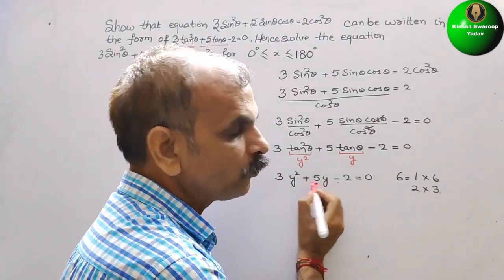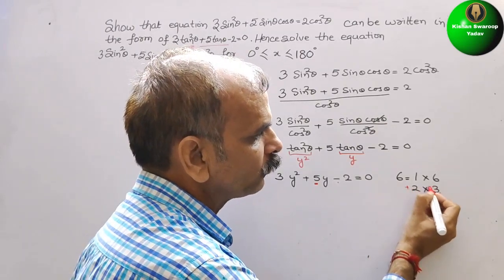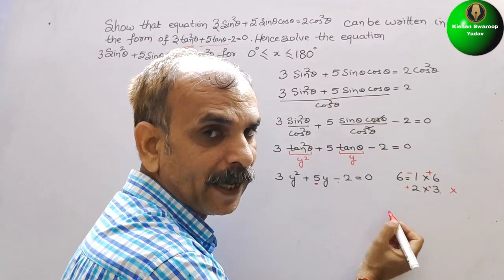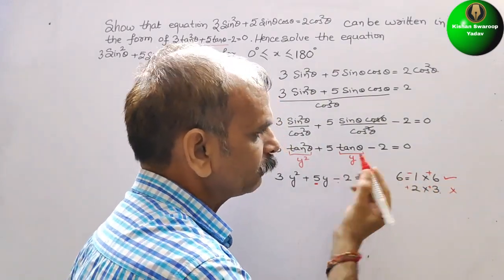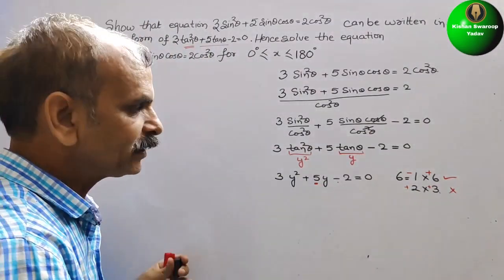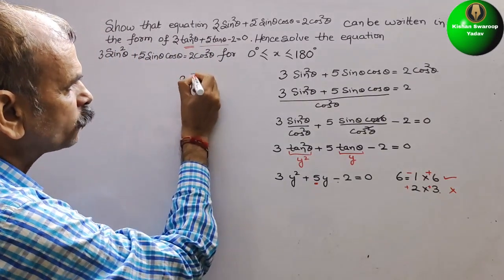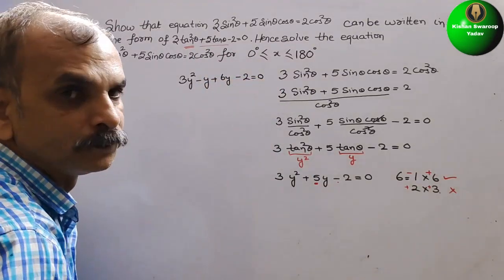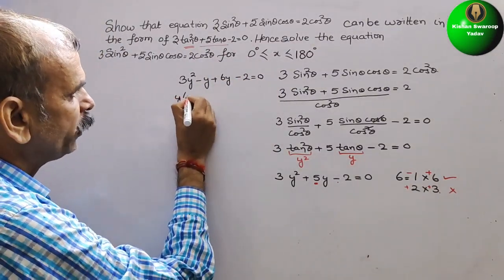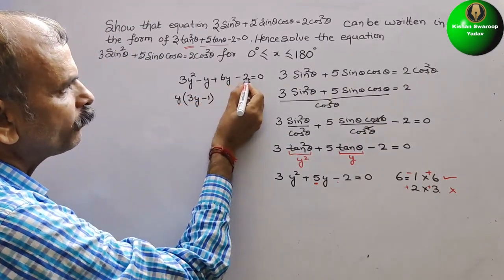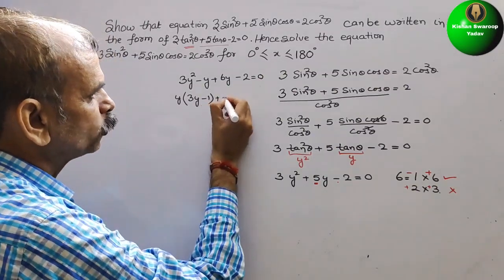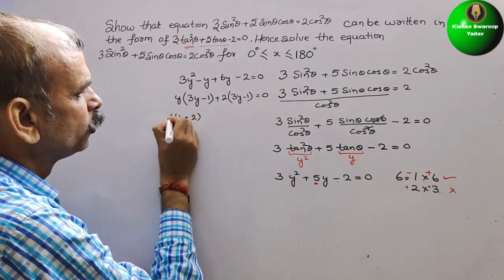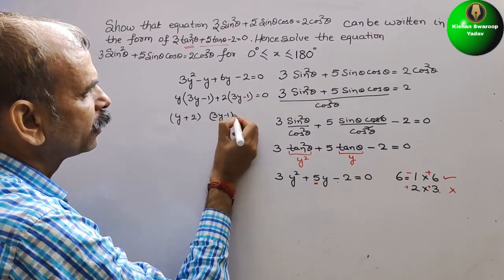They have told us the middle term is 5, so we take both positive — minus 1 and plus 6 — that gives 5. So the factored form is 3y² - y + 6y - 2 = 0. Taking y as common from the first two terms gives y(3y - 1), and 2 as common from the last two gives 2(3y - 1).